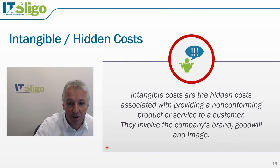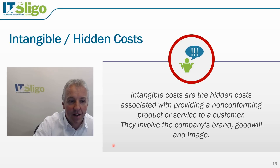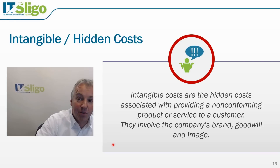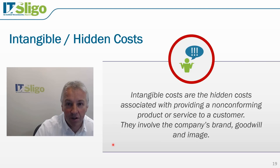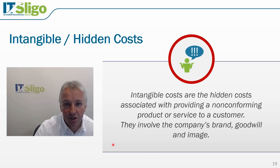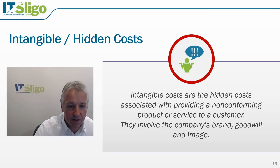The intangible hidden costs relate to brand and goodwill. Branded products command a premium, so you're not just competing on cost. In fact, all quality costs could be considered hidden unless your organization has implemented a financial cost of quality analysis. If you do this, it makes it much easier to justify Six Sigma projects — you can show a baseline and demonstrate that spending more on prevention has reduced internal, external, and intangible failure costs.